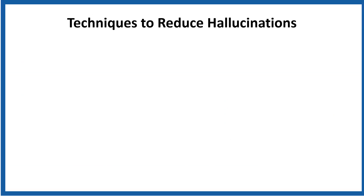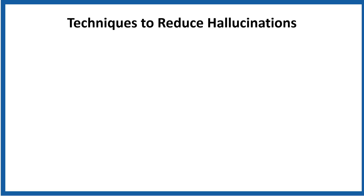Techniques to reduce hallucinations: now that we know why hallucinations happen, let's explore how to reduce them. Retrieval Augmented Generation, or RAG, is one way. The RAG model is connected to a knowledge base like Wikipedia, company documents, or research papers. Instead of relying only on memory, it fetches real data before answering — for example, using ChatGPT plugins or LangChain-powered bots. The benefit is factual grounding. The drawback is it requires well-maintained databases.